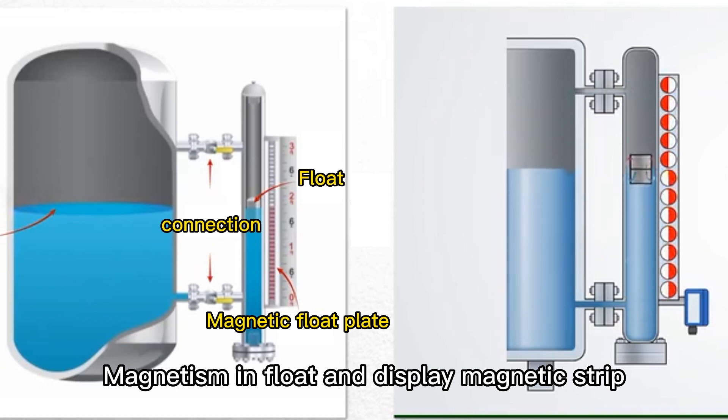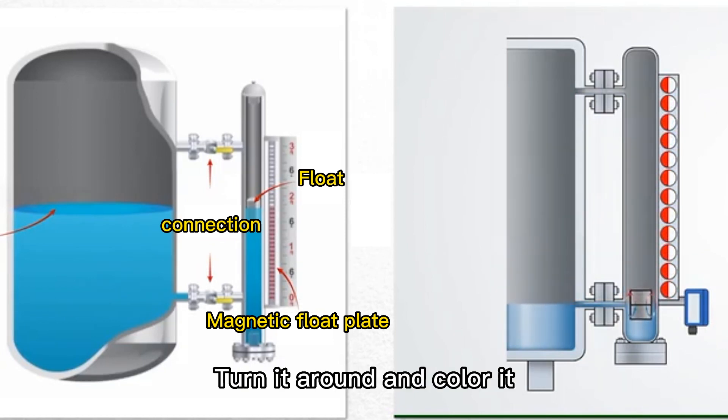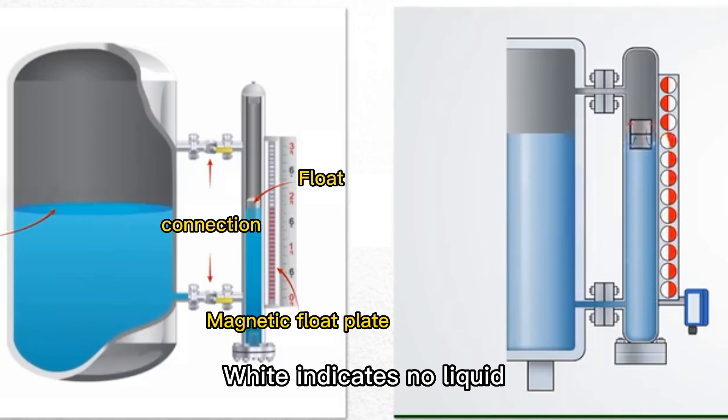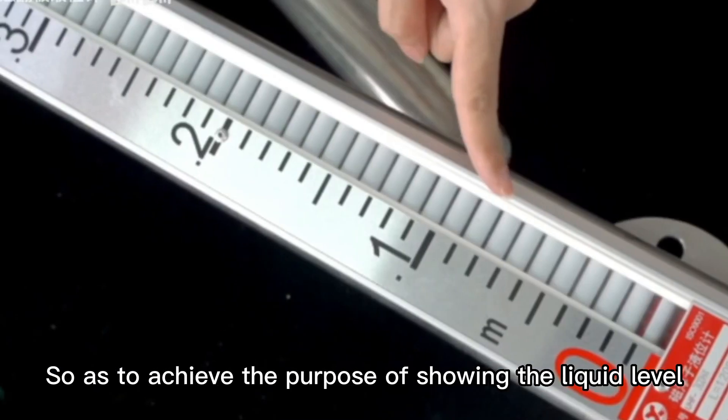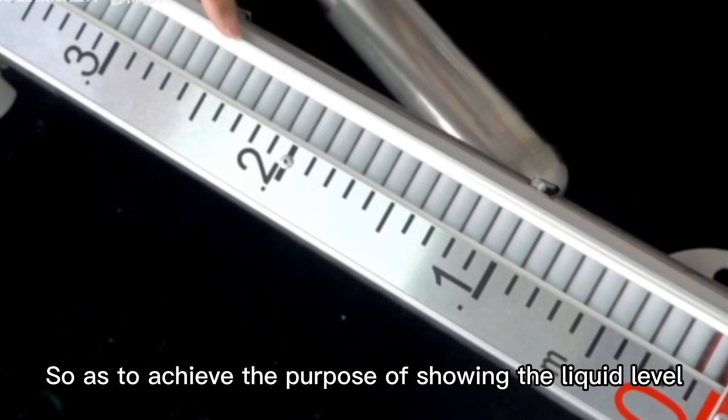A magnet is in the flow and display magnetic strip. Turn it around and color it. White indicates no liquid, so as to achieve the purpose of showing the liquid level.